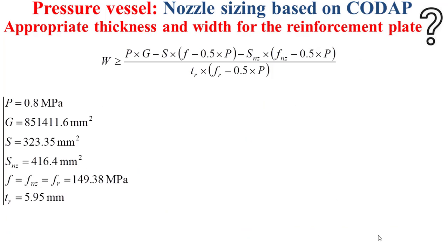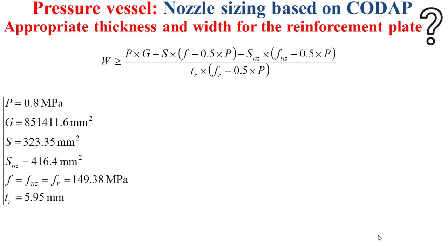Based on this model and the values determined for the pressure, the cross-sectional areas J, S, and S_z, the nominal stress F, and the useful thickness of the reinforcement plate, I can determine the radial width of the reinforcement plate, which should in this case be higher than 645.07 mm.